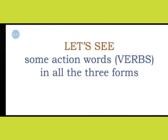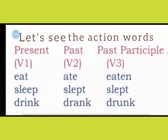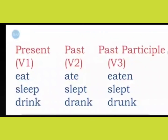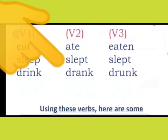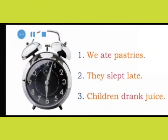Now let's see some action words in all three forms. First: eat, ate, eaten. Second: sleep, slept, slept. Third: drink, drank, drunk. Using the same verbs, I have made some sentences. Let's read them. First, we ate pastries. Second, they slept late. And third, children drank juice.